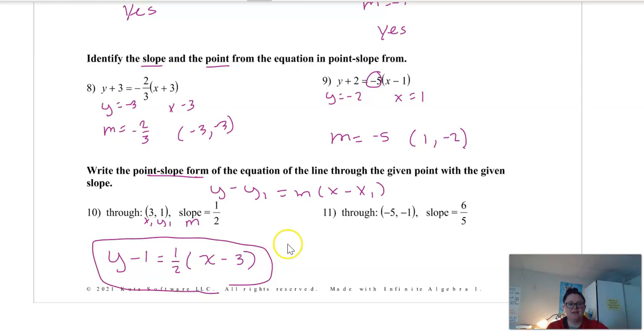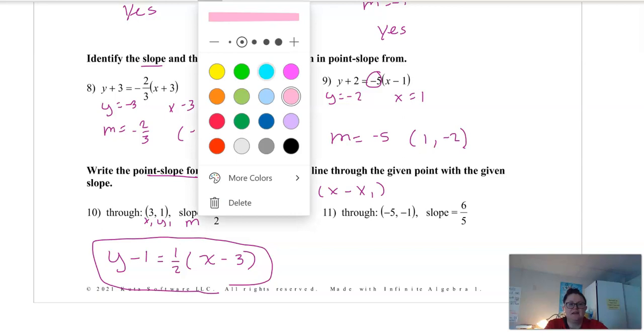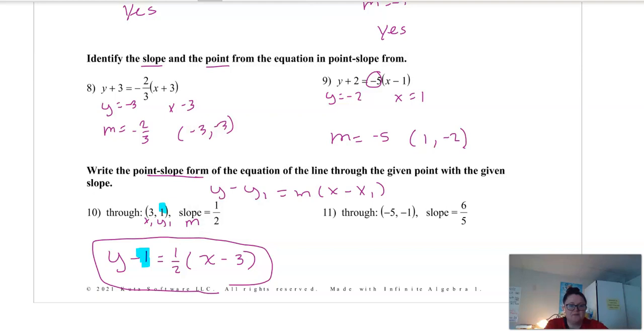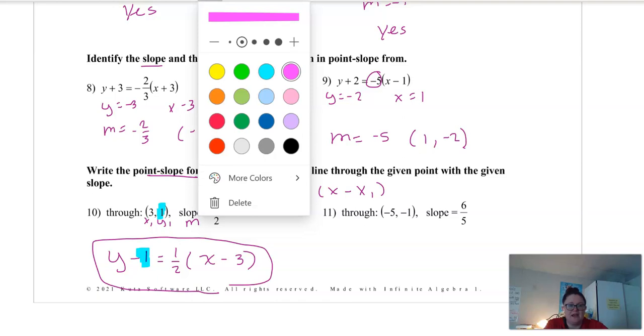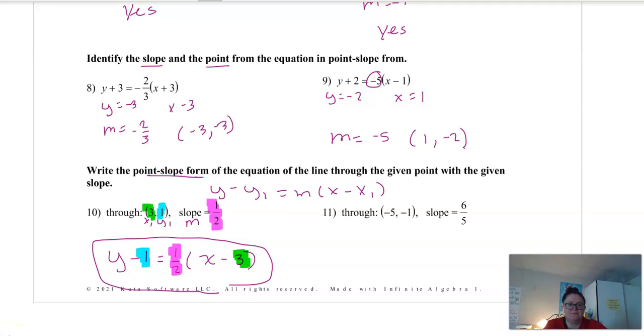If you're having trouble following here, let me highlight some things for you. So you can see that this negative 1 comes from this 1 right here. This 1 half comes from our slope of 1 half. And this 3 is from x₁, which is 3.